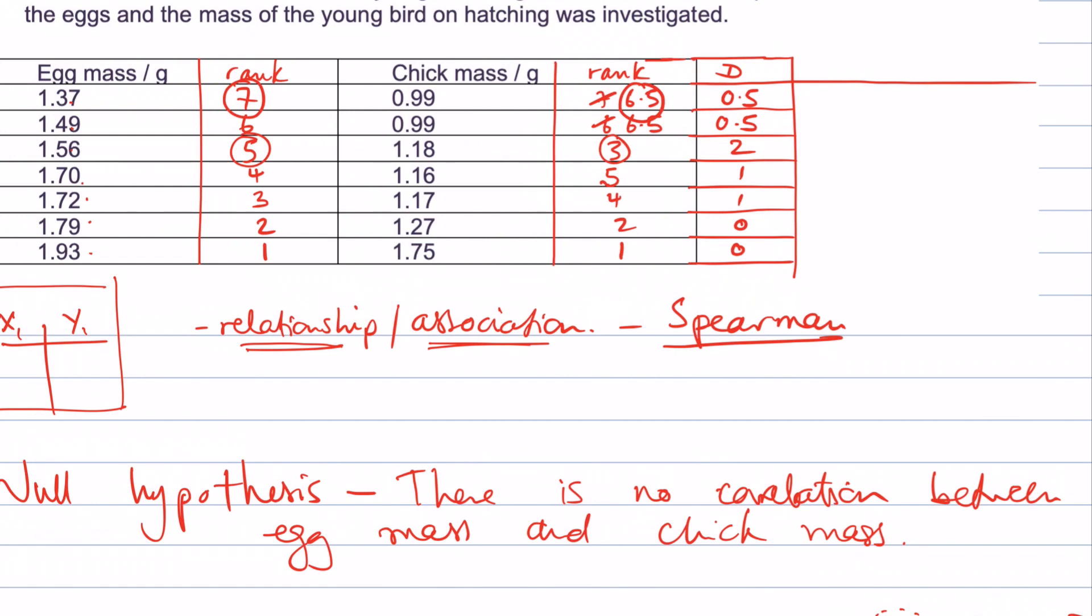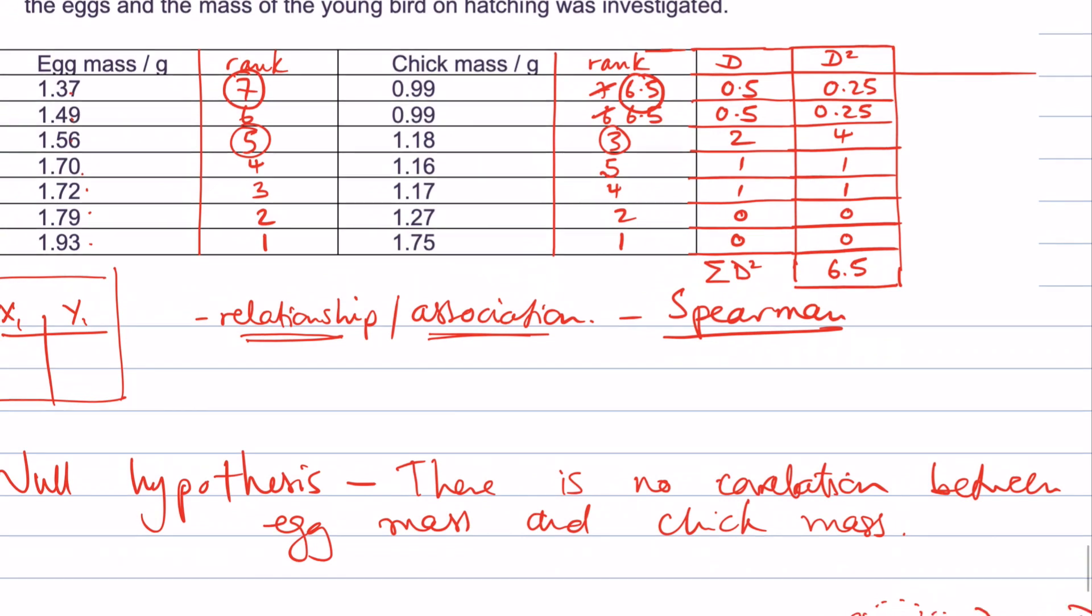The next thing we need to do is work out all the d squareds because this is what we need to add up. So we'll do d squared next. 0.25, 0.25, two squared is four, one squared is one, one squared is one, zero squared is zero, zero squared is zero. Now I just add those up. 0.25 plus 0.25 plus four plus one plus one is equal to 6.5. So the sum of the d squareds is 6.5.